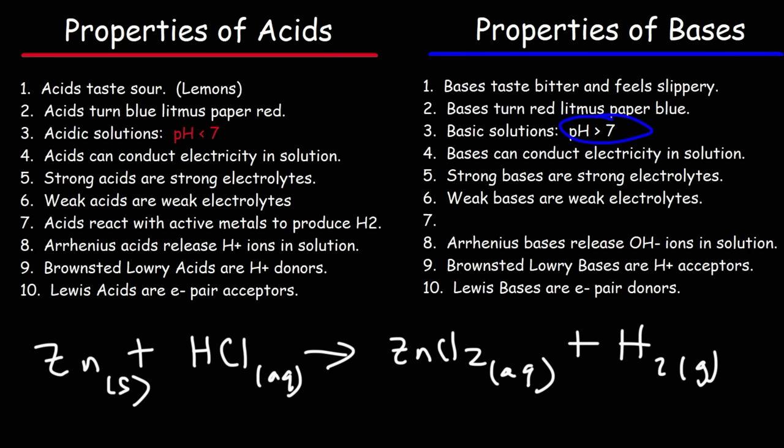Let's review the definitions of acids. Arrhenius acids release H⁺ ions in solution; Arrhenius bases release hydroxide ions in solution. Bronsted-Lowry acids are proton donors; Bronsted-Lowry bases are proton acceptors. Lewis acids are electron pair acceptors; Lewis bases are electron pair donors.